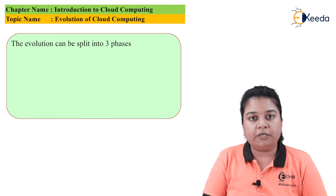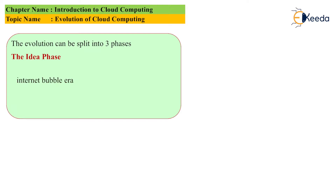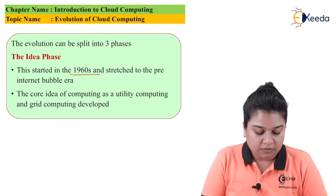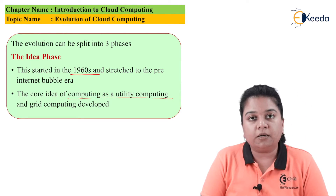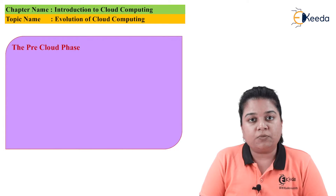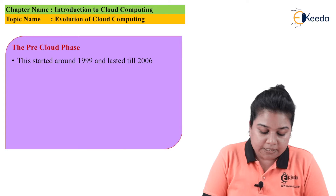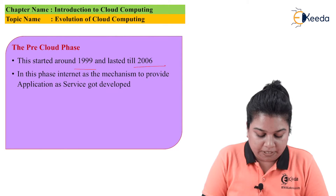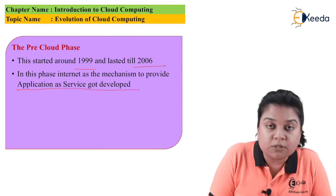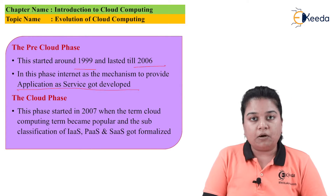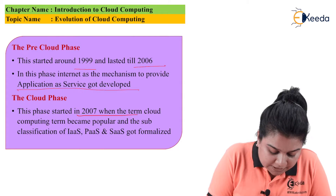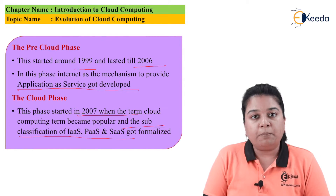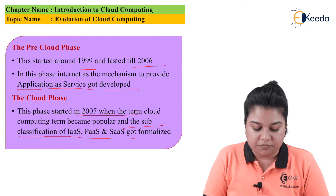The evolution can be split into three phases. The first one is the idea phase, which started in the 1960s and stretched to the pre-internet bubble era, where the core ideas of utility computing and grid computing developed. The next one is the pre-cloud phase, which started around 1999 and lasted till 2006, where the internet as a mechanism to provide application as a service got developed. Then comes the cloud phase, which started in 2007 when the term cloud computing became popular, and the subclassification of infrastructure as a service, platform as a service, and software as a service got formalized.